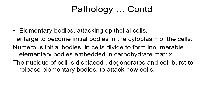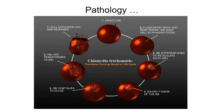The nucleus of the infected cell is displaced, degenerates, and the cell bursts, releasing elementary bodies that attack new cells. When the cell bursts, scar formation occurs — this is why trachoma leads to scarring. A picture illustrates the life cycle: elementary body penetrates the cell, initial body forms, binary fission occurs, the cell bursts, and reinvasion of another cell follows — this is the life cycle of Chlamydia trachomatis.